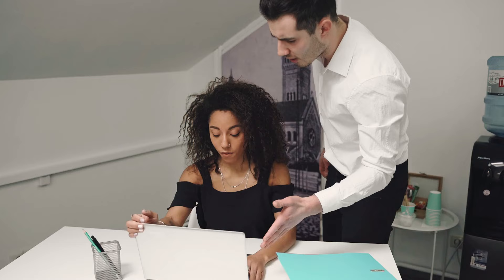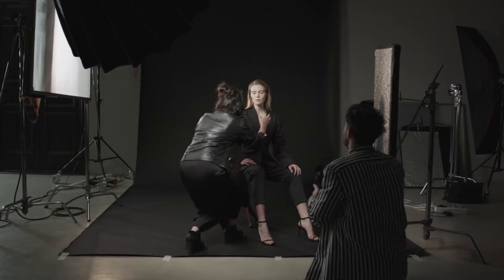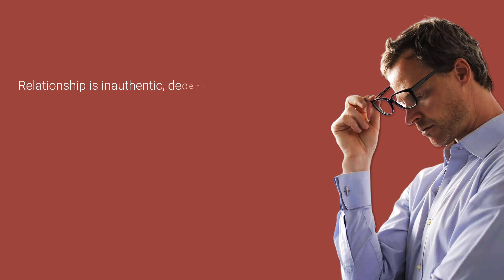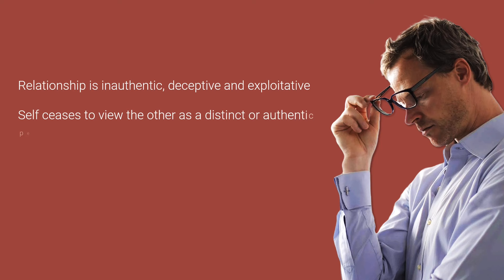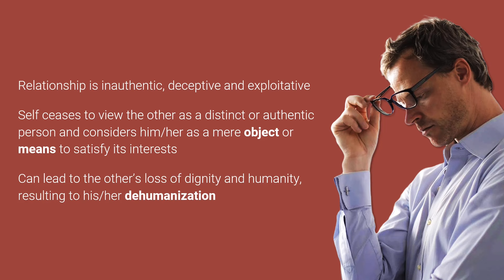Examples of I-it relationships are employers who treat workers like machines, and businesses that use women in their advertisement just to increase sales. This kind of relationship results in what is called alienation. Alienation happens when a relationship is inauthentic, deceptive and exploitative. It arises when the self ceases to view the other as a distinct or authentic person, and considers him or her as a mere object or means to satisfy its interests. It is a disorientating sense of exclusion that can lead to the other's loss of dignity and humanity, resulting in his or her dehumanization.